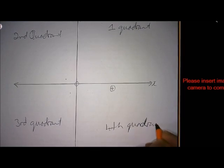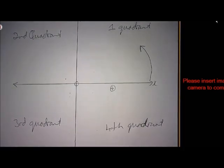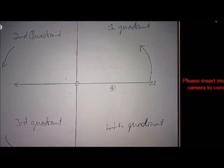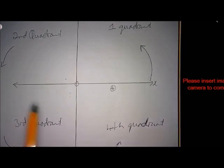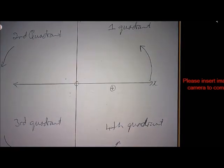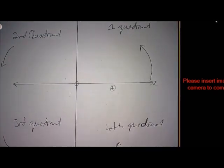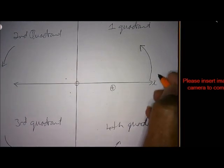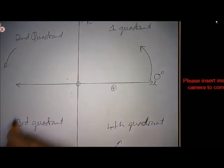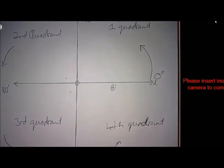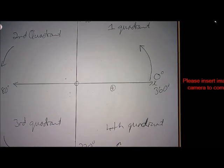We are going to rotate in the anti-clockwise direction, because that is when we deal with positive angles. If we move in the clockwise direction, it will be negative angles. So for now we're only dealing with positive angles. Here we have zero degrees, there 90 degrees, here 180 degrees, here 270 degrees, and then back to 360 to complete your revolution.